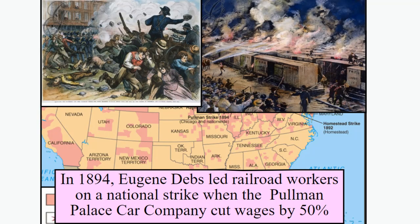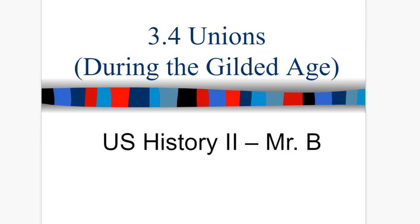In 1894, Eugene Debs led railroad workers on a national strike when the Pullman Palace Car Company cut wages by 50%. Throughout the Gilded Age, it was a period of new inventions and advancements in people's lives, but at the same time a fight back from workers to figure out where they fit in and how to make sure the economy and businesses are strong while average people at home are taken care of. This was going to be a challenge for the American government — to see which side they take and how they actually evolve and work with these competing interests.